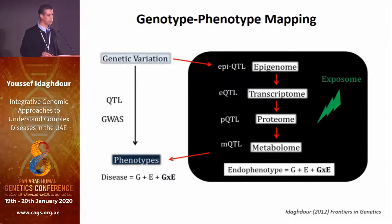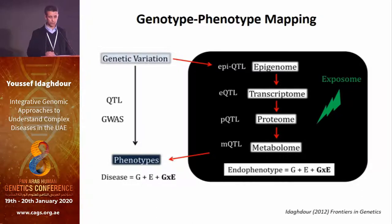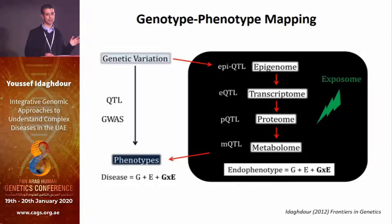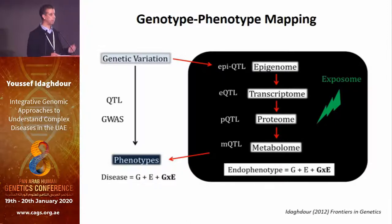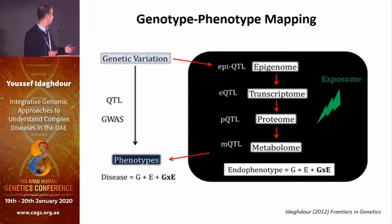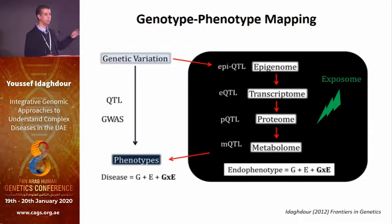This is just to give an idea about the framework, about how we think about these questions. You've seen presentations in the morning talking about designs like GWAS studies. If you are a geneticist, usually what you try to do is link genotype and phenotype. People use family studies or QTL mapping — it's the same idea. But in most recent years, people have been using GWAS studies. It's a very long way to get from genotype to a phenotype, and there is a black box in between.